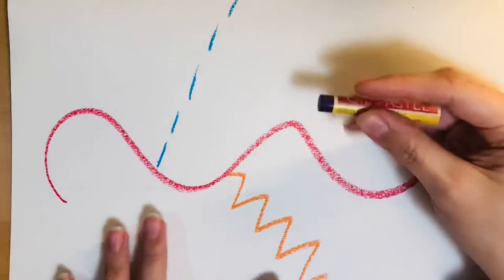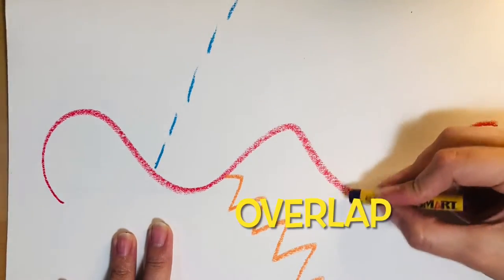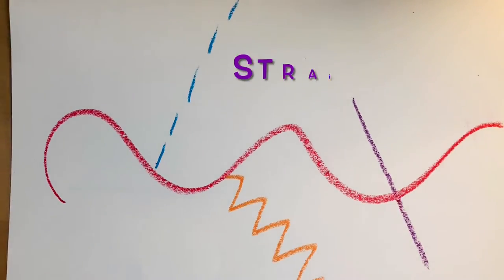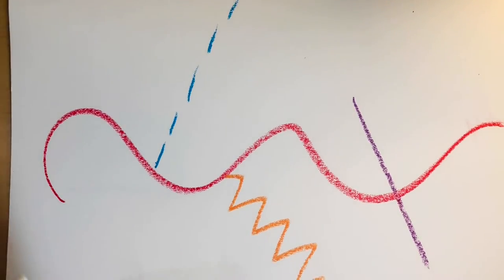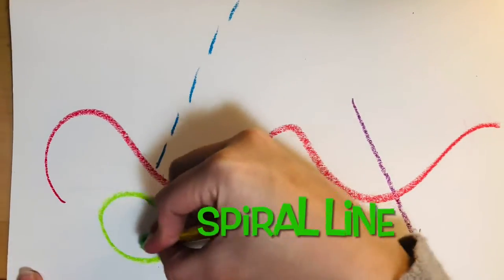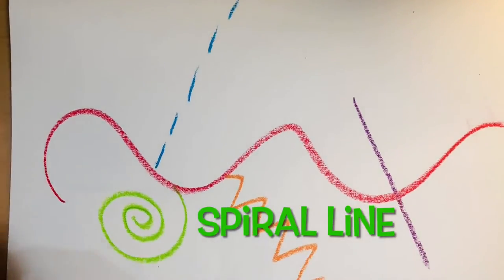We could even overlap our lines like I am with my straight line over my wavy line, and we can even make up our own lines. For example, we see my spiral line in green.